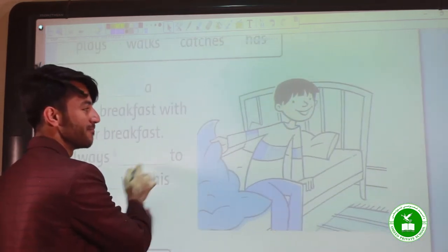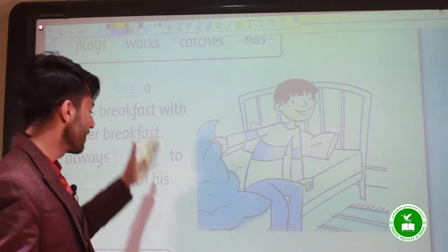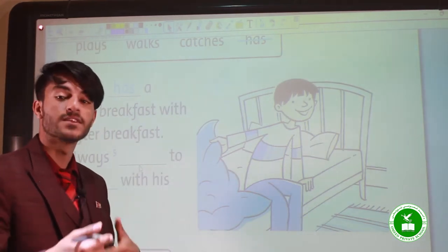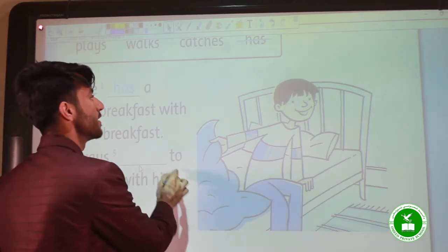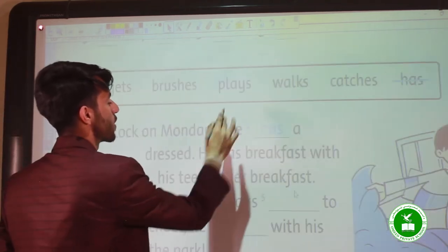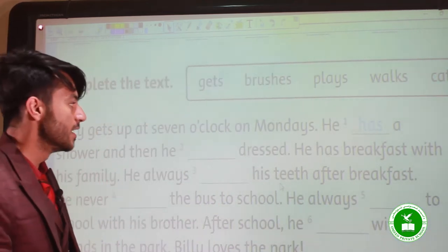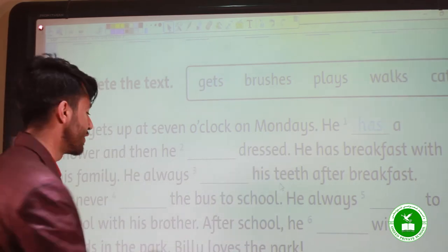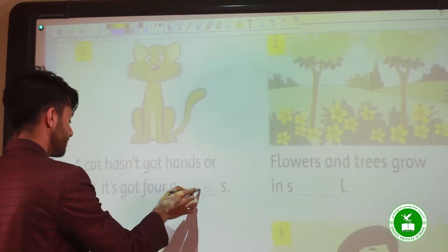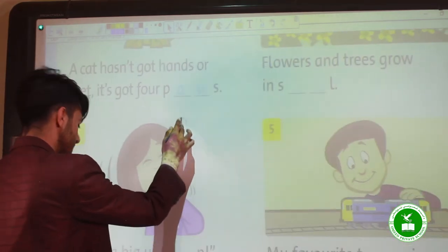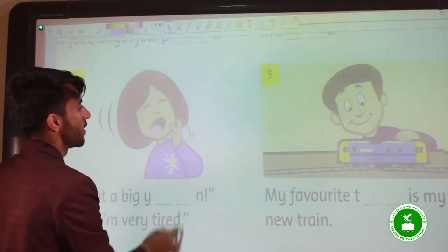This is Billy. So you can complete the rest of the sentences yourselves. Just try to use the correct words in the correct places. Let's go to the other part, which is part six, and also it is the last part of review.